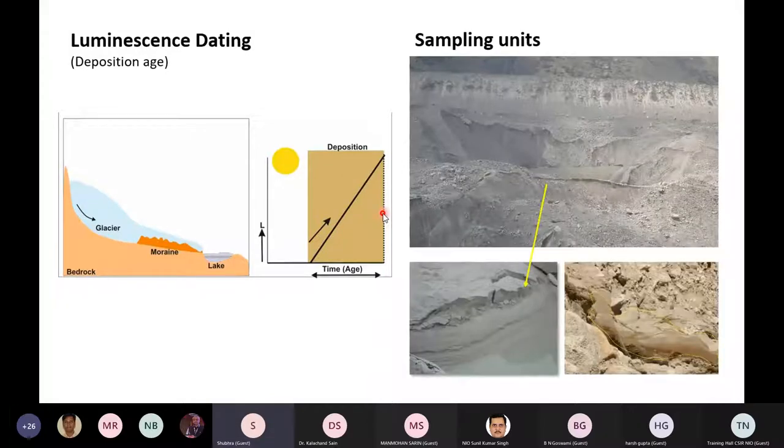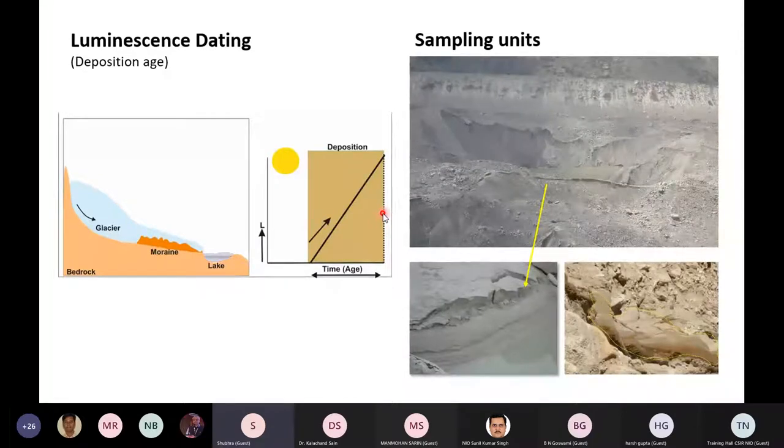And we sample sand lenses which we can infer that has been deposited in the supraglacial environment. So for an example, I've shown a supraglacial lake over a glacier where you can find such sand lenses and ensure that and which satisfies the basic premise of this technique. And this section shows one such sand lens in the geological section embedded within the moraine deposit.